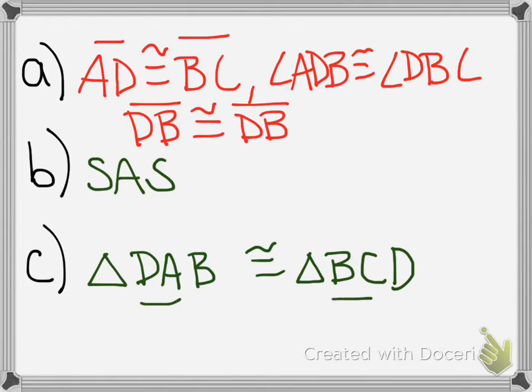Angle ADB, which has a vertex at D, is congruent to angle DBC, which has a vertex of B. So those check out. And then you have the last statement where DB is congruent to DB. DB is the outer two letters here, and it's the outer two letters here. And so this checks out.